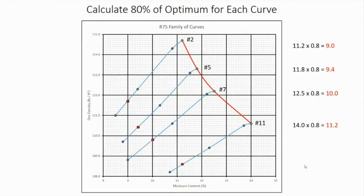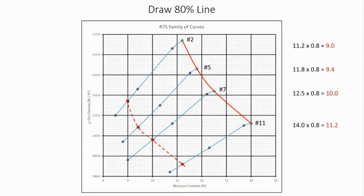We then plot those 80% of optimum moisture values on the respective curves. The final step to develop the family of curves is to connect those points to establish our 80% line. This is the procedure for drawing a family of curves, and you will be expected to perform this in your practical examinations when you come in to certify.